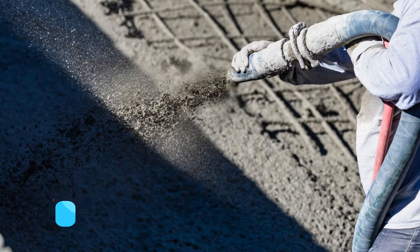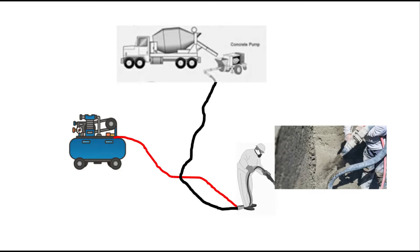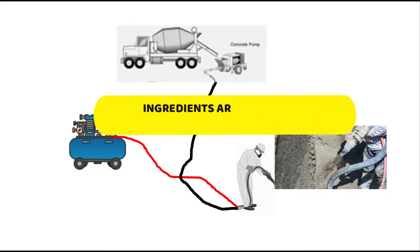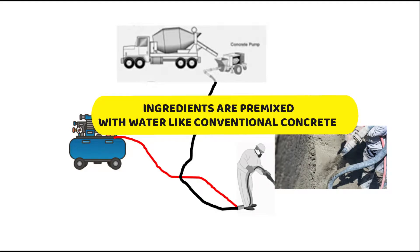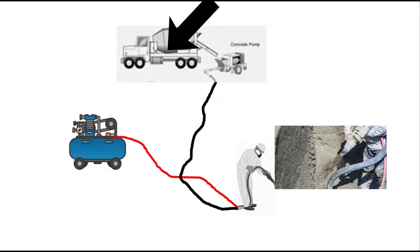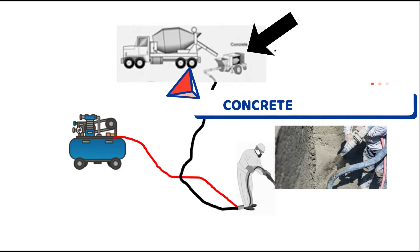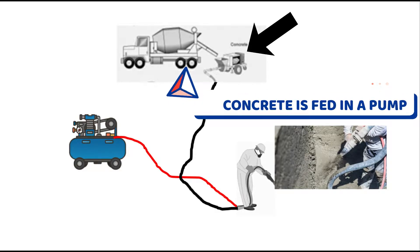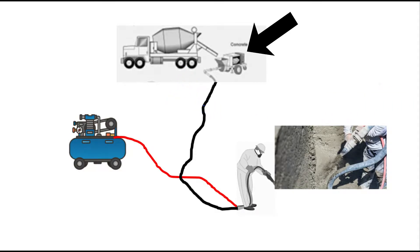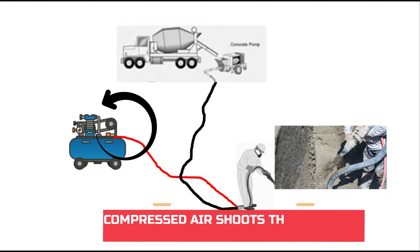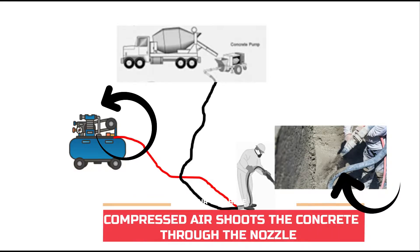Next is the wet mix process, or shotcrete. This is the typical figure. Ingredients are premixed with water like conventional concrete. The concrete is fed into a pump. Compressed air shoots the concrete through the nozzle.